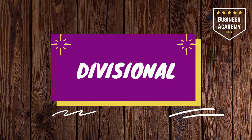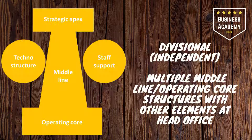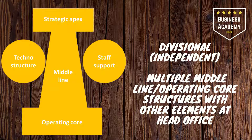Divisional structures. Divisional, otherwise known as Independent, have multiple middle line and operating core structures with other elements at the head office. You've got head office — that Strategic Apex — and then lots of middle lines: a middle line for the American office, a middle line for the Asian office, a middle line for the African office, and so on, each with their own operating cores. You'd see this with a multinational organisation with offices across the world, like a big consultancy — Procter & Gamble or something along those lines.